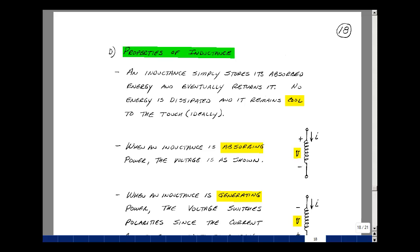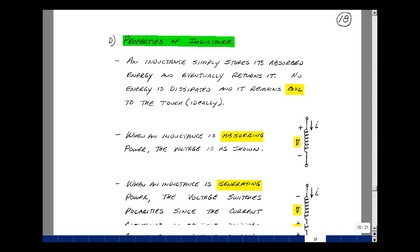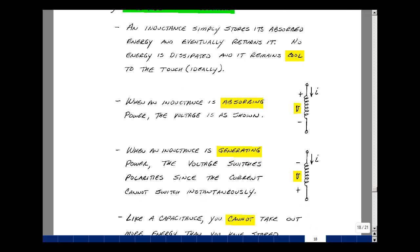When inductance is absorbing power, the current enters the plus terminal with our passive sign convention. But when it's generating power, the current cannot change instantaneously, so the voltage would have to flip polarity. It indeed does that.